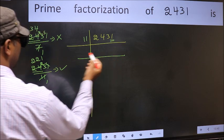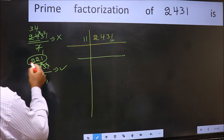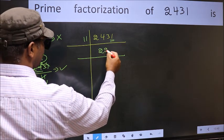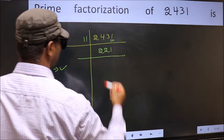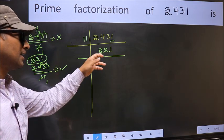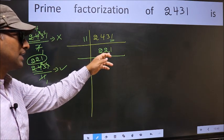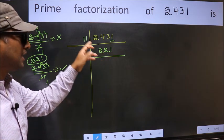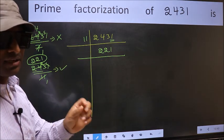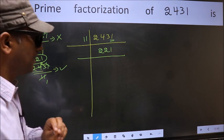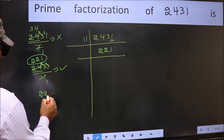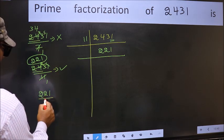Here we write the result: 221. Now we start checking the divisibility of 221 from 11 onwards. Let us start with 11: 221 divided by 11.